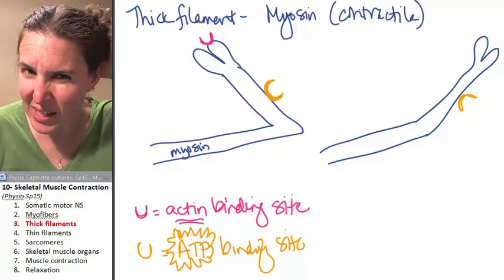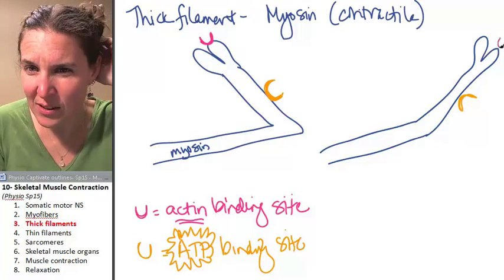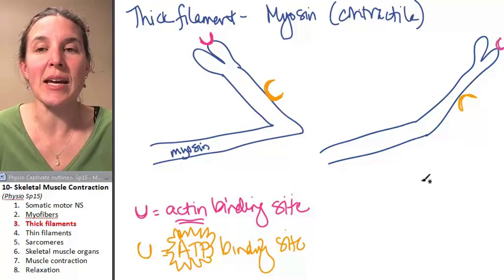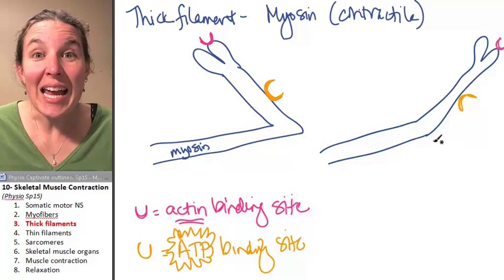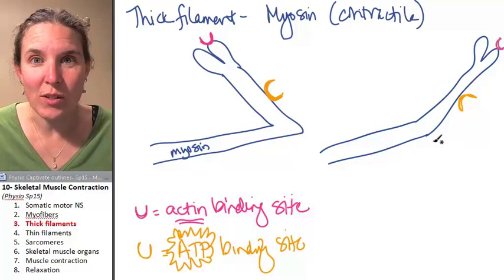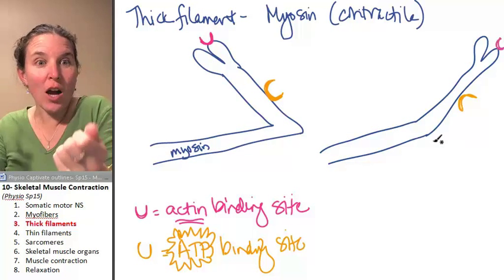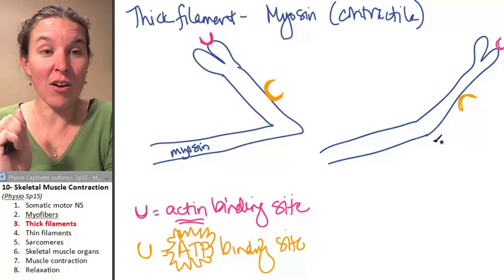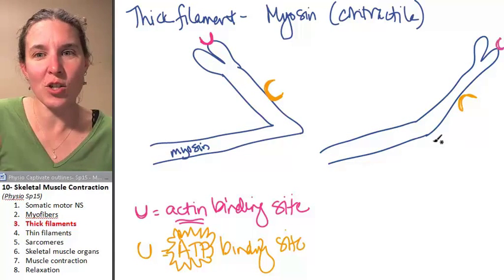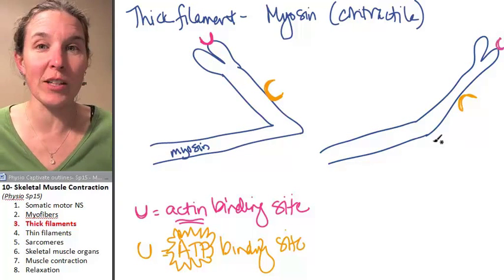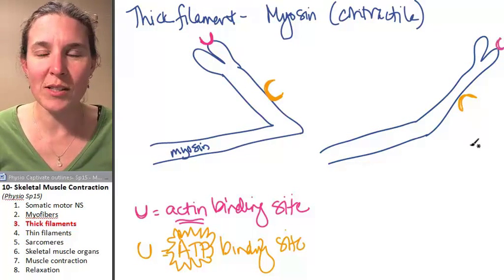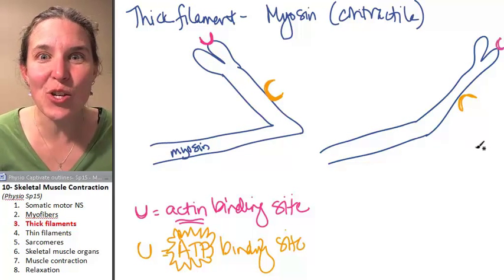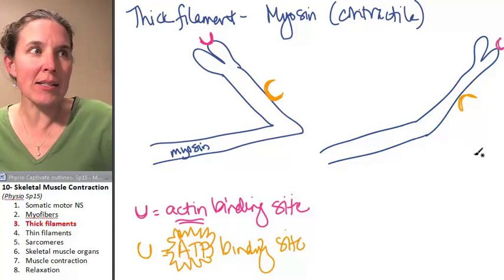But guess what has to happen? We still have this little actin binding site, and we have an ATP binding site. And it's like pulling back a catapult. If you cock, I mean, can't you pull back a catapult and stick it there and hold it, and then all you have to do is push a button and fling water balloons at someone? That's what it's like.